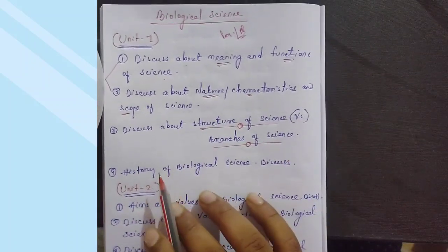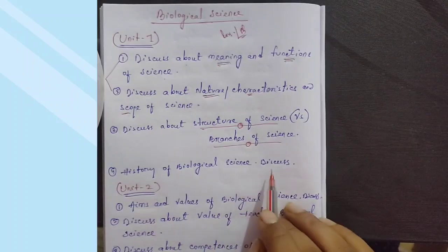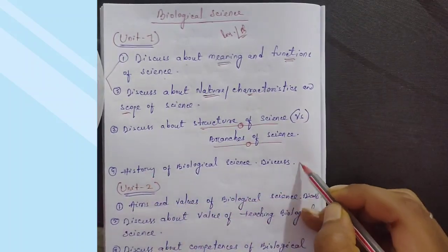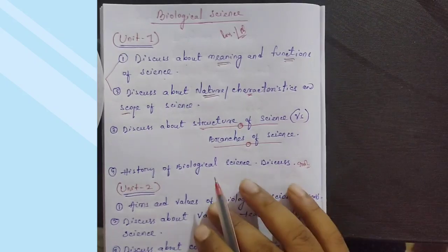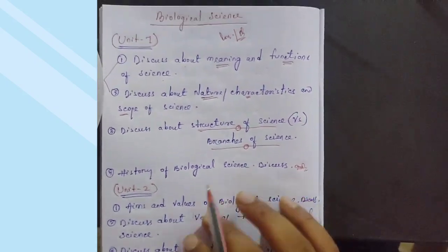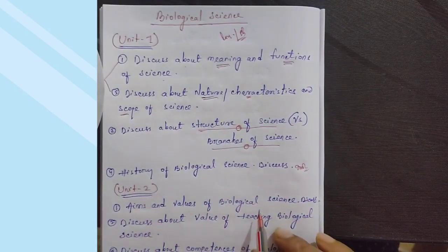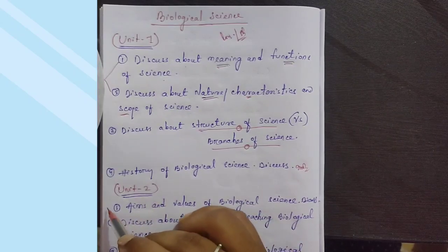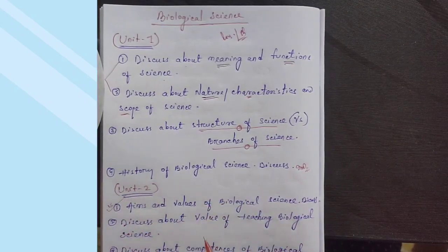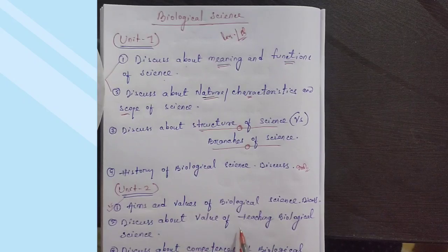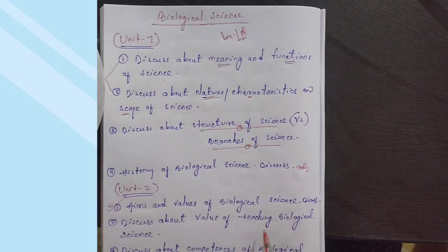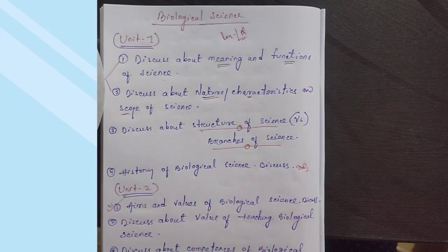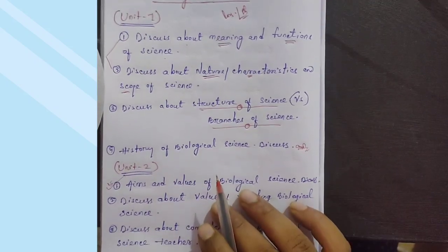Unit 2 content: History of biological science. Discuss biological science history - this is an important question. Unit 2 also covers aims and values of biological science. You can write short notes on this, around five marks. Discuss the value of teaching biological science - this is another important topic.